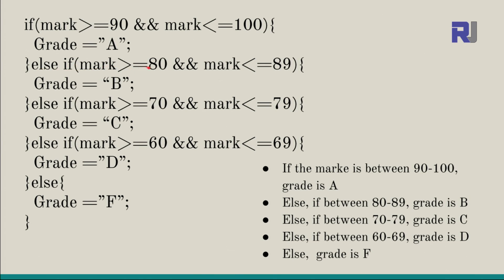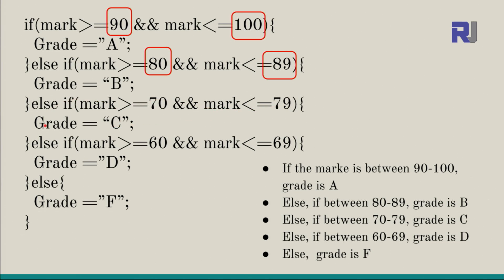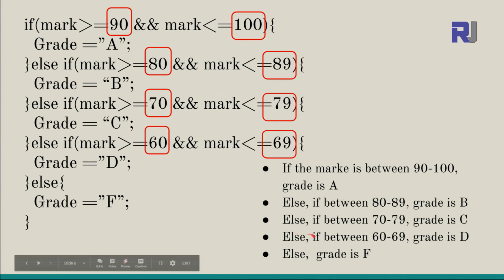Else if mark is greater than or equal to 80 AND less than or equal to 89 — both must be true — then grade = 'B'. Else if between 70 and 79, grade = 'C'. Else if mark is greater than 60 and less than or equal to 69, grade = 'D'. Else — meaning the mark doesn't fit any range — we assign 'F': the person has failed.